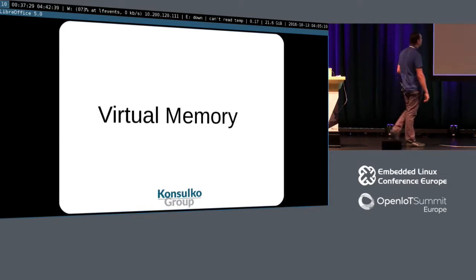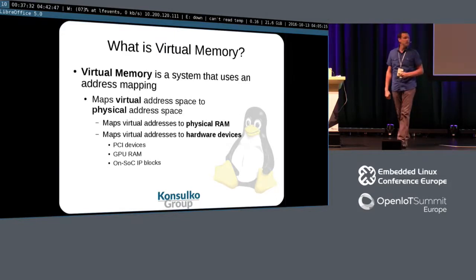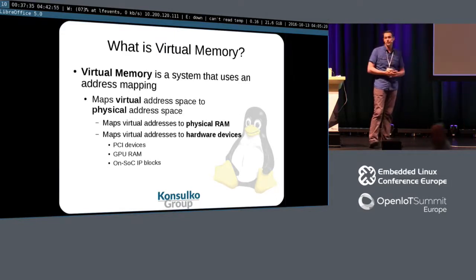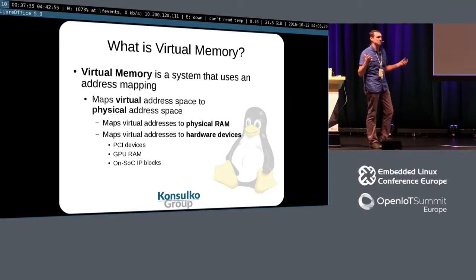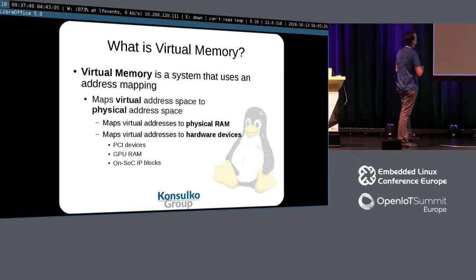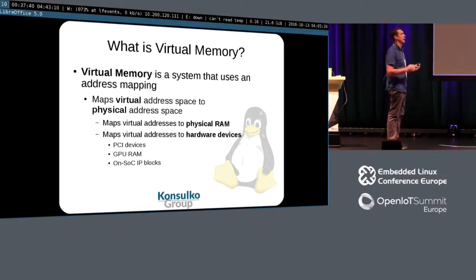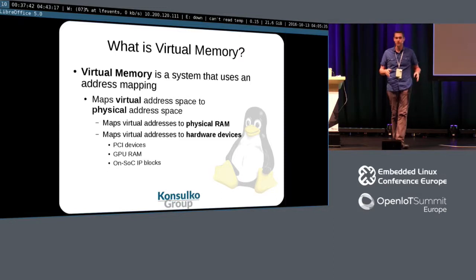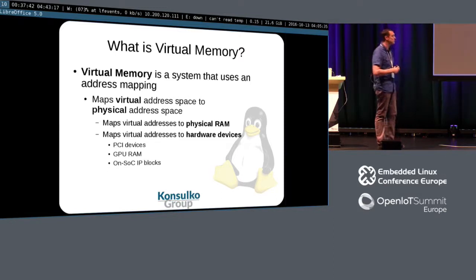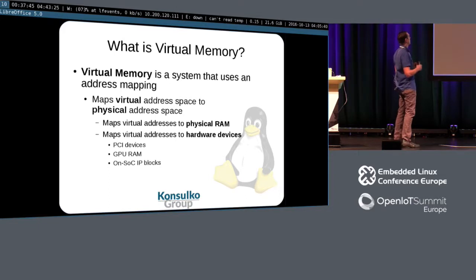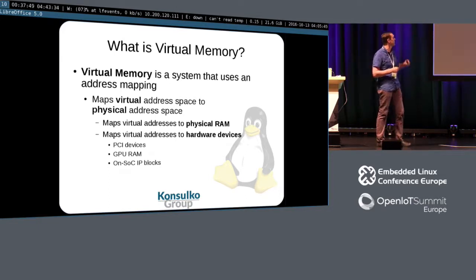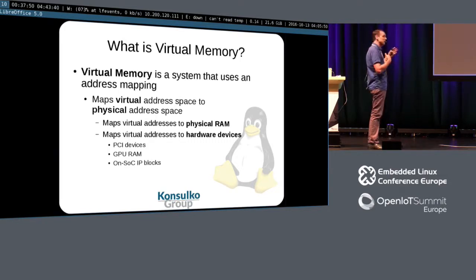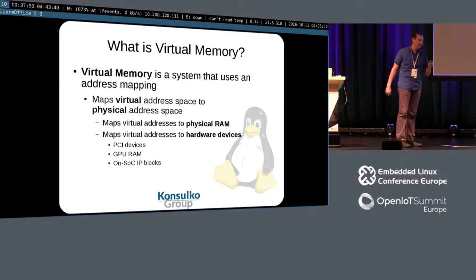So in comes virtual memory, and this is where things get fun. What is it? It's a mapping — a virtual mapping, hence the name virtual. You map a virtual address — a fake address — to that physical address. When we look back at that x86 map, that's all the physical world. If we can just think in virtual addresses, we can have any mapping we want. We map virtual addresses to physical RAM, but we also map virtual addresses to hardware devices — PCI, GPU RAM, on-SoC IP blocks — everything.